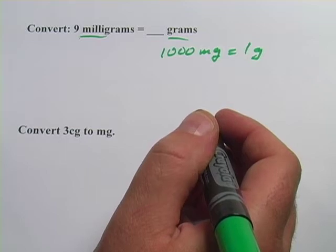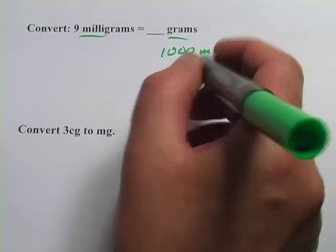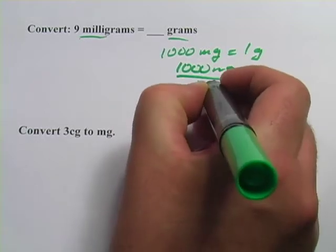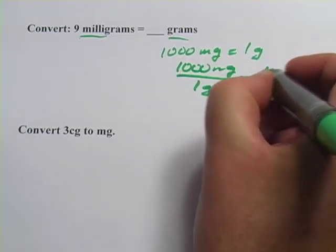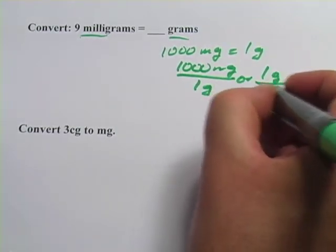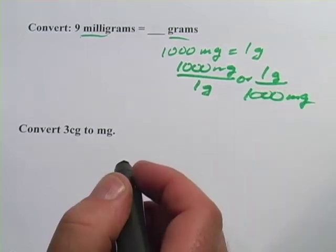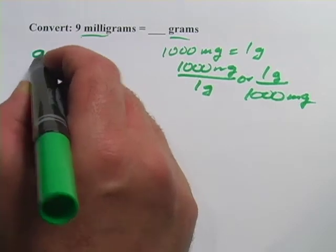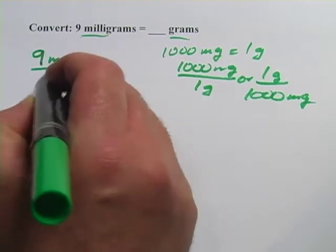And then you want to turn that into a unit multiplier or a conversion factor. So 1,000 milligrams per one gram or one gram per 1,000 milligrams. Either one is correct. Let's set up our problem now. We're starting with milligrams, so 9 milligrams over 1.